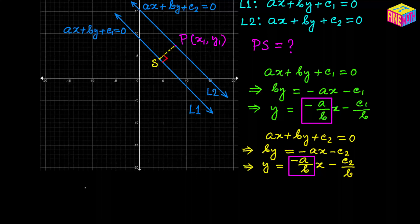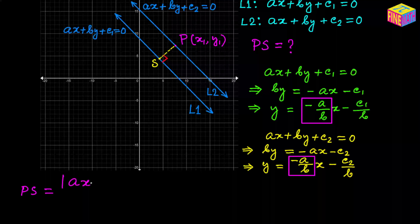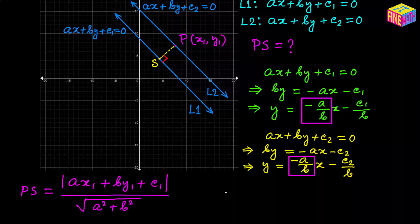In the previous video we derived the formula for the distance of a line from a point. Using that same formula, the distance of line L1 from point P is: PS = |ax₁ + by₁ + c₁| / √(a² + b²). The previous video I posted is exactly on this topic. Feel free to watch that video.